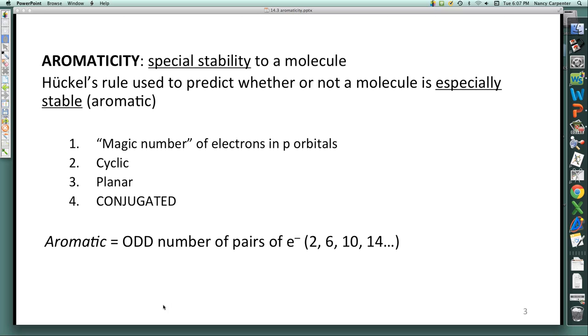The magic number is 2, or 6, or 10, or 14. In other words, if there's an odd number of pairs of electrons, one pair would be 2, three pairs would be 6, obviously, and so on and so forth. This number of electrons in conjugated p-orbitals in a cyclic planar molecule makes it aromatic. If it's an even number of pairs of electrons, in other words, if the p-orbitals in a cyclic planar conjugated molecule contain 4, or 8, or 12, dot dot dot electrons, it is known as an anti-aromatic molecule, and that is especially unstable.